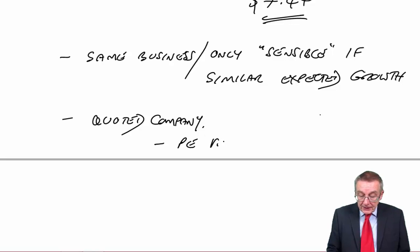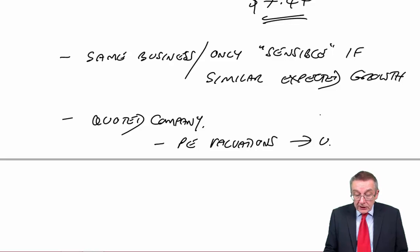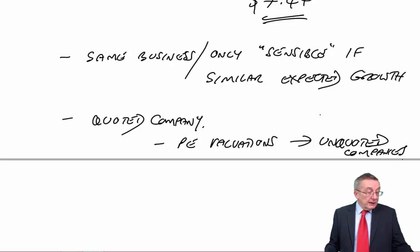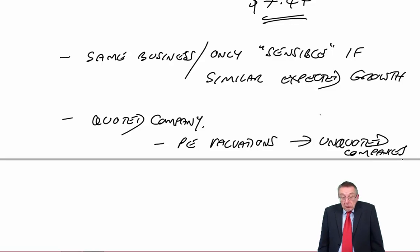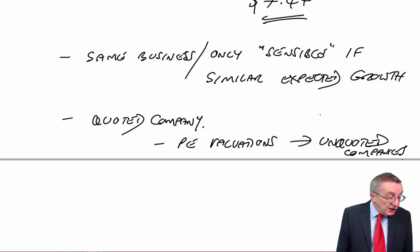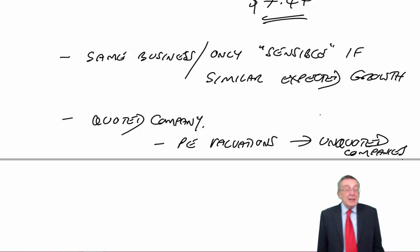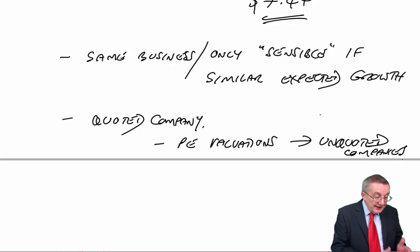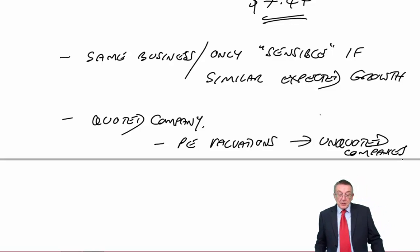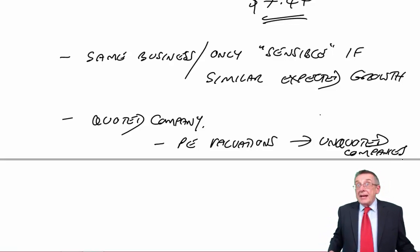We're quoted. PE valuations are really used for valuing unquoted companies. That's when it becomes useful. The market value of this company is 1090. You know, why would you do a PE valuation? It is 1090. Last year it was 1049. It's when you're an unquoted company and you're trying to put a value on it that one approach you might use is on a PE basis and look at similar quoted companies. So, there's question two.